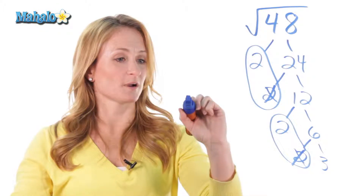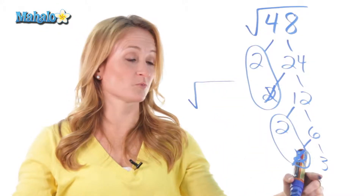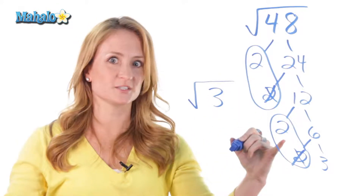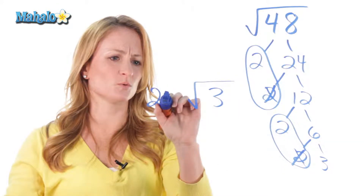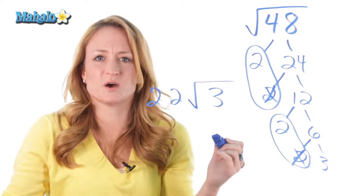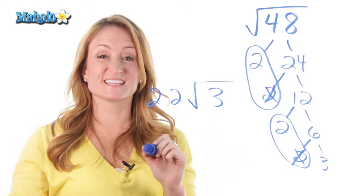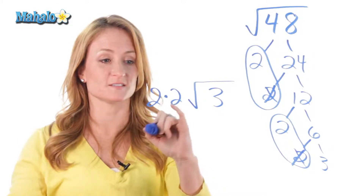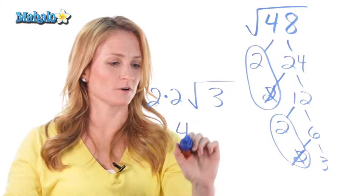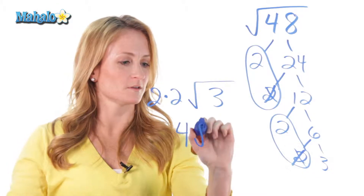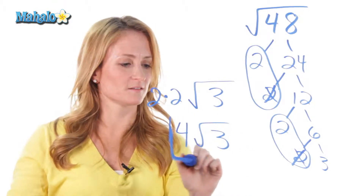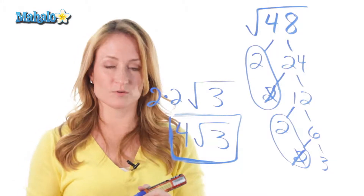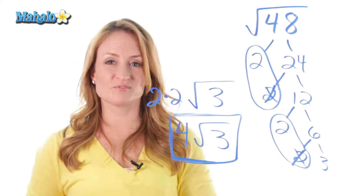So let's rewrite our trap. The 3 stayed inside, and now we had a 2 and a 2 exit. What do we do with those 2's? It doesn't become 22 — anything that gets out of the trap gets multiplied together. So now this is 2 times 2, which is 4, and that 3 was left inside. So in simplifying the square root of 48, we get 4 root 3. And that's how you simplify a radical.